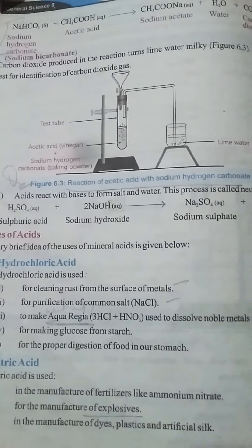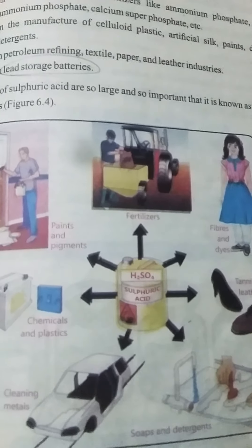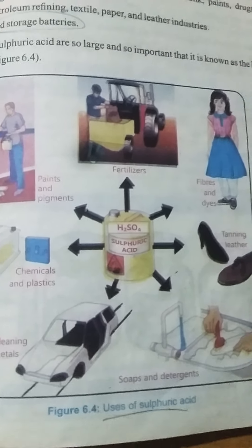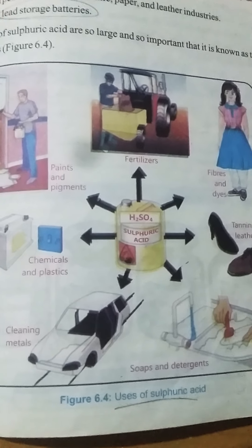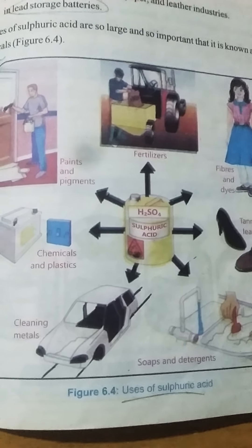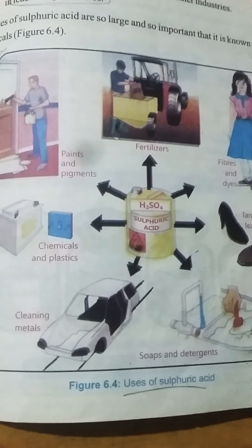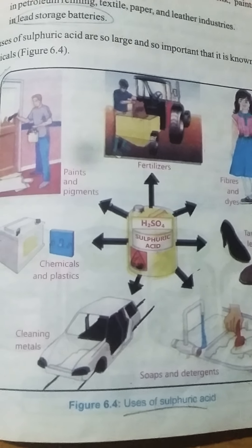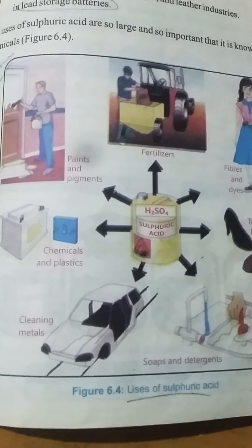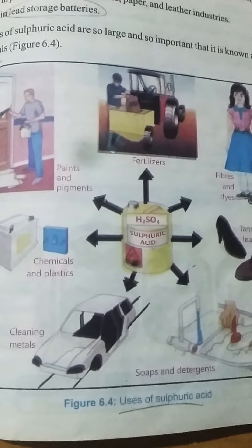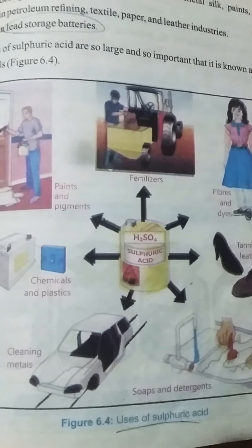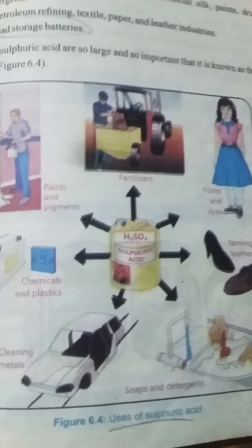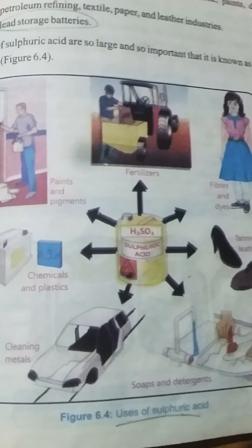Next we have the uses of sulfuric acid. Sulfuric acid has the widest range of uses, which is why it is also called the king of chemicals. As shown in the diagram, it is first of all used as a dehydrating agent, meaning it removes water from substances. It is also used to make fertilizers such as ammonium phosphate, calcium ammonium phosphate, and calcium superphosphate.